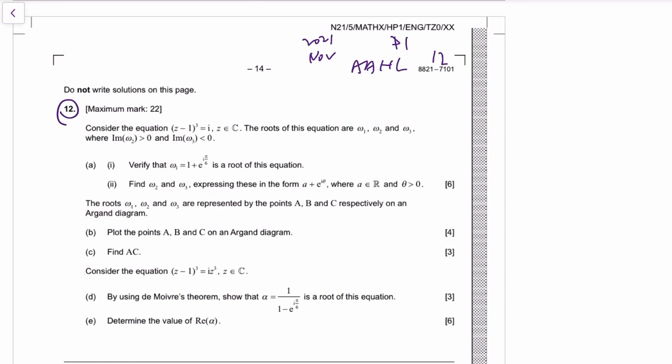It feels kind of difficult, a little bit maybe. Okay, we have an equation z minus one cubed equals i, so De Moivre's theorem I guess. We have three roots.